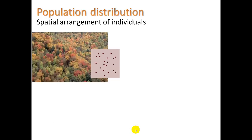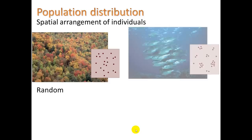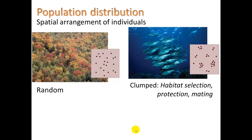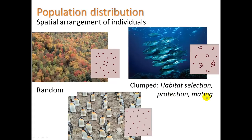There can be different ways of populations becoming distributed spatially. Here we have a random distribution. Here we have a clumped distribution, which might happen because they need a particular kind of habitat, offer protection to each other, or maybe for mating purposes. Here's a uniform distribution, which might be a territorial issue, or it could be that certain nutrient requirements require them to have space between each other.